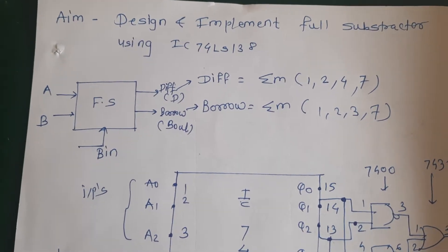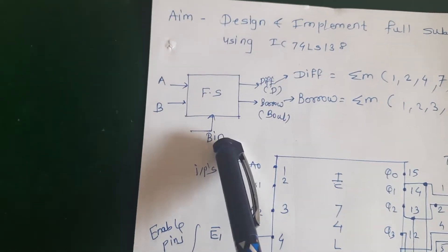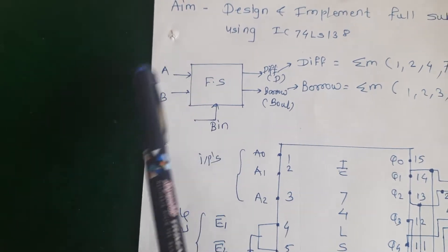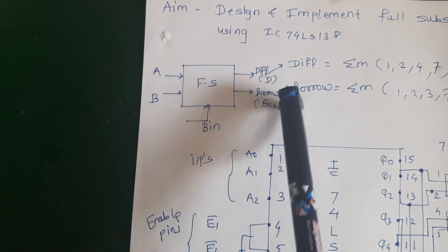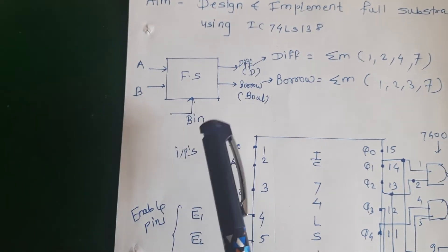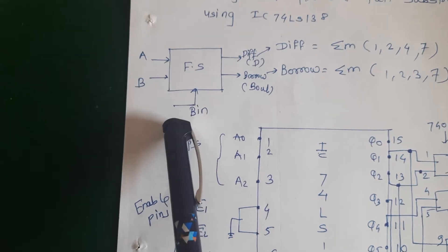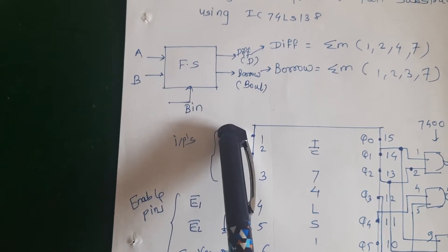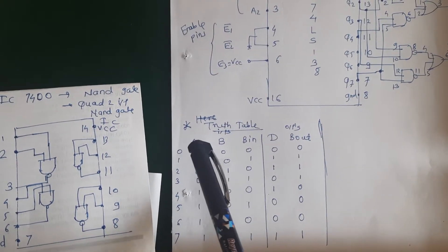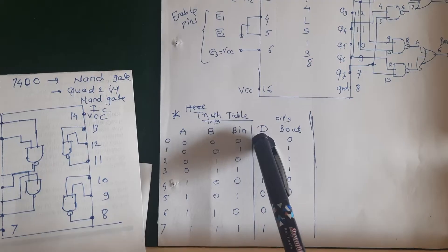First of all, what is a full subtractor? You can see here the block diagram. In this block diagram you can see A, B, and Bin as 3 inputs and 2 outputs, that is difference and borrow.